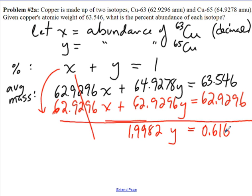Now dividing both sides by the coefficient for y, y would equal 0.616 divided by 1.9982. We're dividing three significant digits by four significant digits, so my answer should contain three significant digits. That's going to be 0.308.